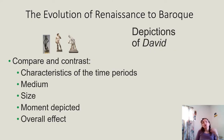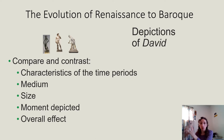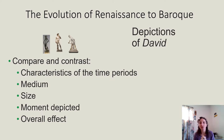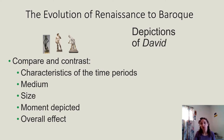Now we're going to talk about the evolution from the Renaissance to the Baroque — which is what we've been leading to with the Mannerist movement. Mannerism is a moment in between two times where artists aren't quite done with the Renaissance but haven't quite begun the Baroque era. Let's look at three depictions of David and talk about the evolution, comparing characteristics of time, medium, size, overall effect, and the moment of the story depicted.